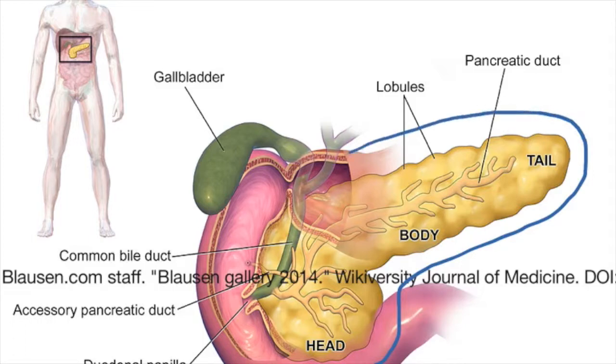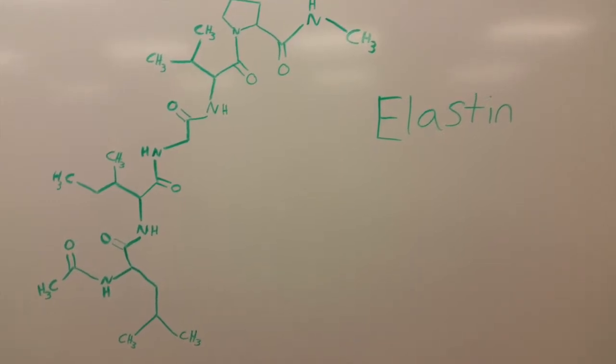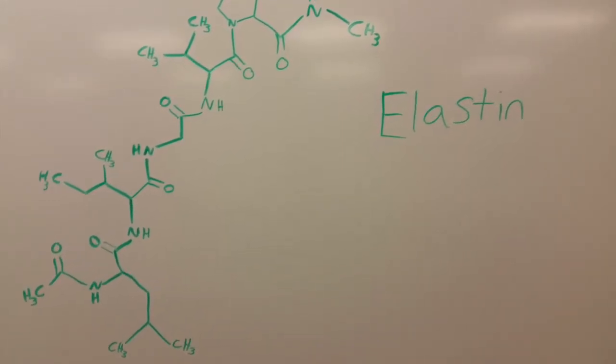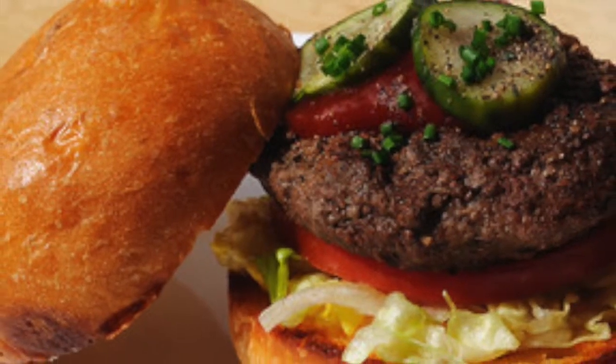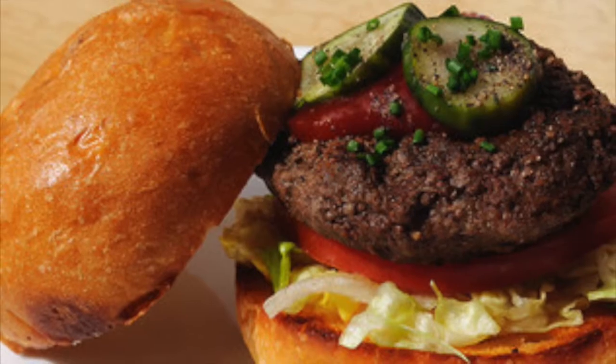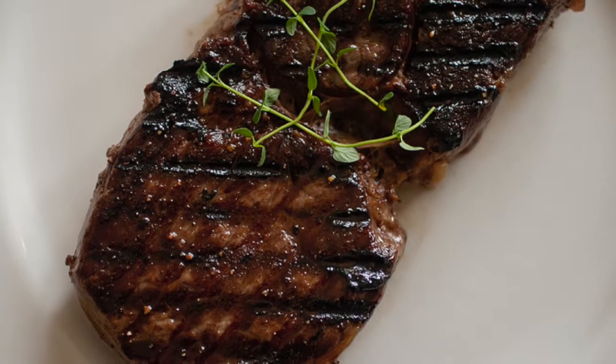Once in the duodenum, elastase-1 aids in digestion by breaking down elastin, which is an insoluble protein found in connective tissues like ligaments and major arteries. Meats in our diets contain connective tissues, and having an enzyme to break them down is important for proper digestion.